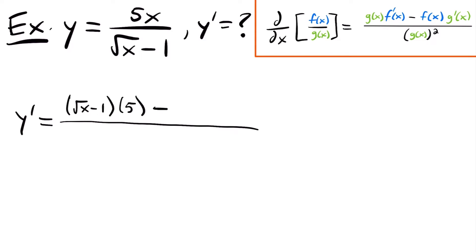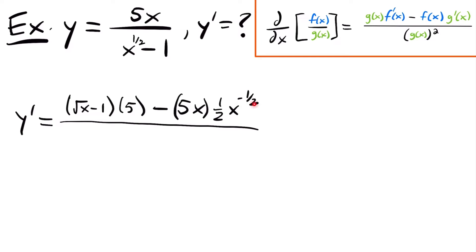Then we will subtract our top function, 5x, and multiply that by the derivative of our denominator. We could rewrite that square root of x to be x to the 1/2 power, which will allow us to take that power rule derivative more easily. The derivative of the denominator is the derivative of x to the 1/2 minus 1, which is just 0, so really it's just the derivative of x to the 1/2 power. We will have 1/2 times x to the negative 1/2 power, since we subtract 1 from our power: 1/2 minus 1 gives us negative 1/2. And then this will all be divided by our denominator squared, which in its original form would be the square root of x minus 1 squared.